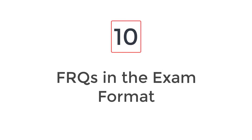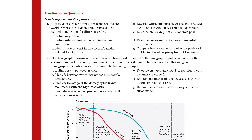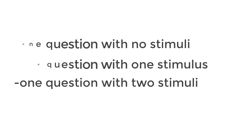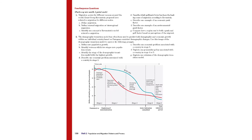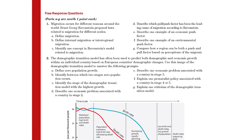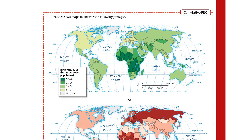Number 10: FRQs in the exam format. Each unit concludes with three FRQs. Our FRQs follow the same format and have one question with no stimuli, one question with one stimulus, and one question with two stimuli. Two of the three questions will address only the material presented in the specific unit, while one of the FRQs will be cumulative, reflecting the FRQ coverage students will see on exam day. This allows for a mix of immediate and cumulative skill practice.